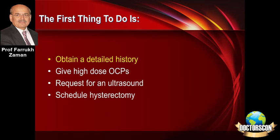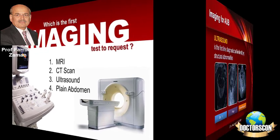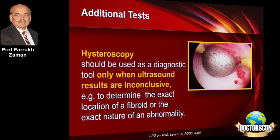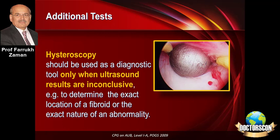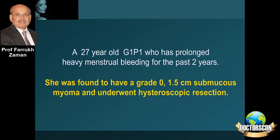So far as investigations are concerned, there are multiple imaging techniques available, but ultrasound is convenient, cheaper, and essentially very informative for menstrual abnormalities. In these images you can see a fibroid, a polyp, and excessive growth of the endometrial lining — hyperplasia. Further tests, if required, can be in the form of hysteroscopy, but only if ultrasound is inconclusive. In this particular patient, it turned out to be a small submucous fibroid which was removed hysteroscopically. This was a case where hormonal treatment was not required — it was a structural problem because there was a fibroid.